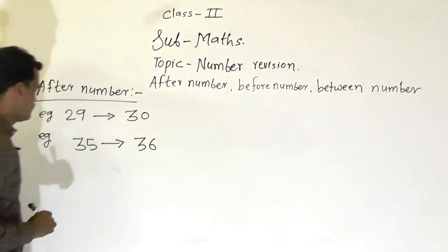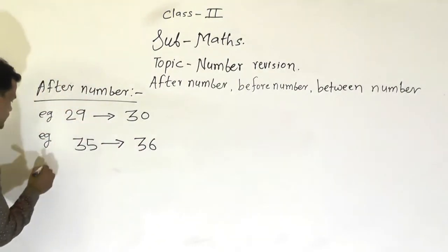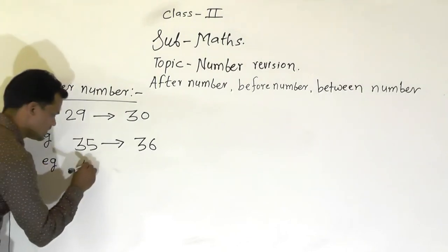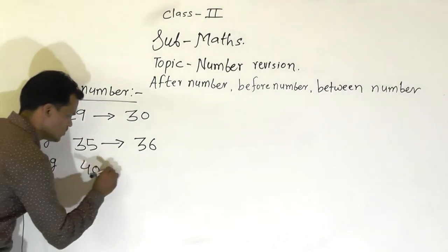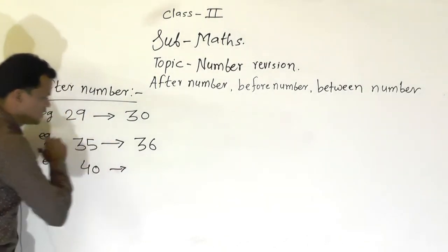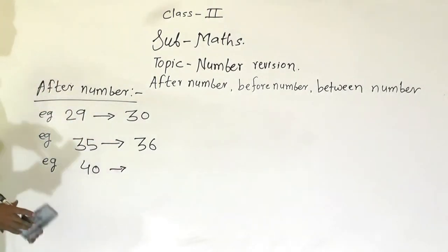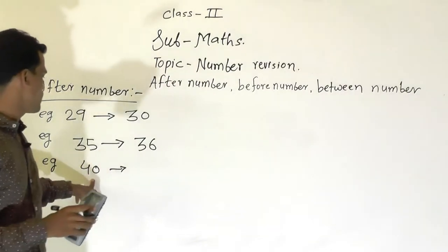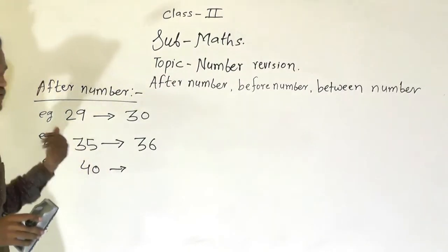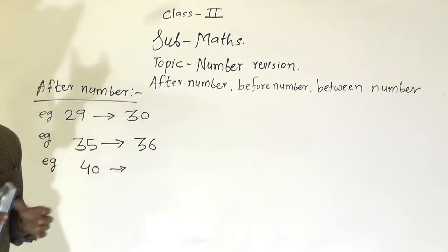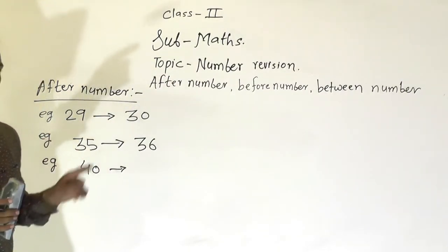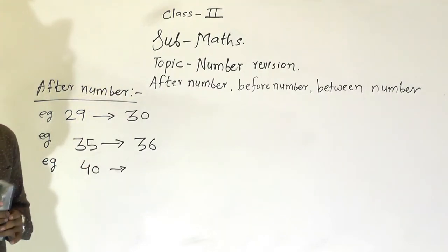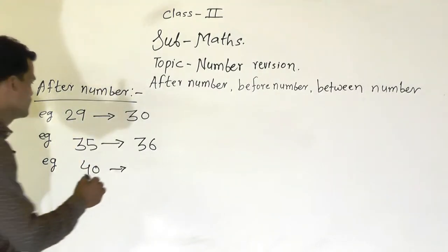Now one more example we will see here. 40. So which number comes after 40? That is 41. So the after number of 40 is 41.